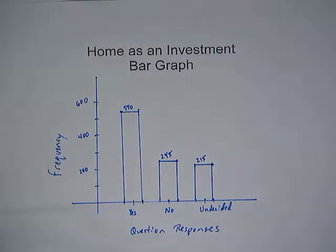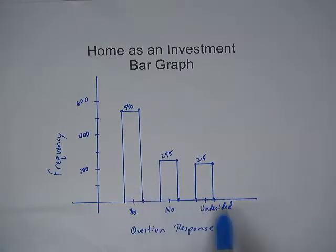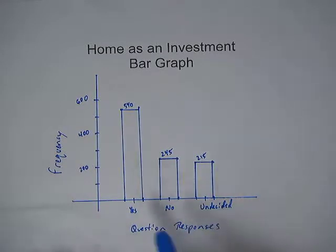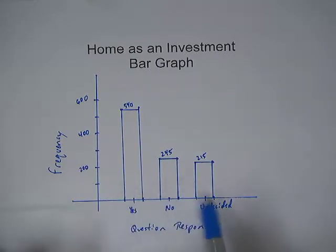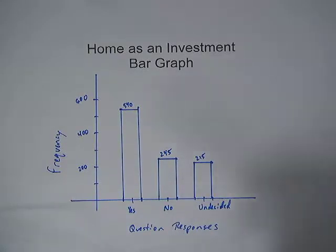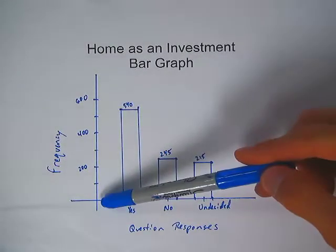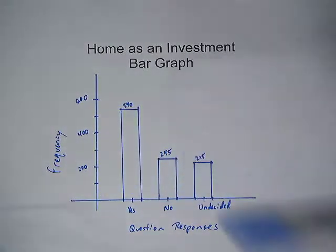This represents a bar graph of the home-as-investment data set. One thing to note is that the order of the categories was arbitrary — I could have put undecided first, then yes, then no. The ordering of qualitative data is generally not important; the categories can be labeled any way you'd like. Make sure you have a consistent scale on your y-axis and that bars are centered on their category.